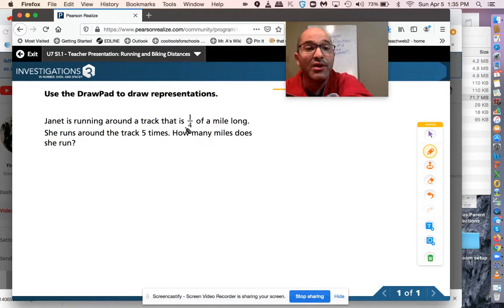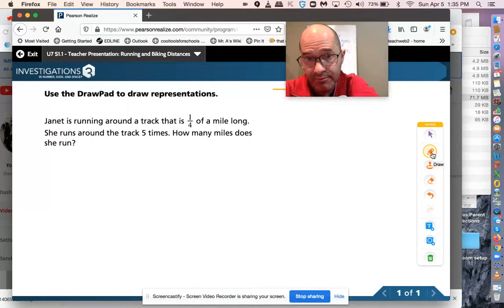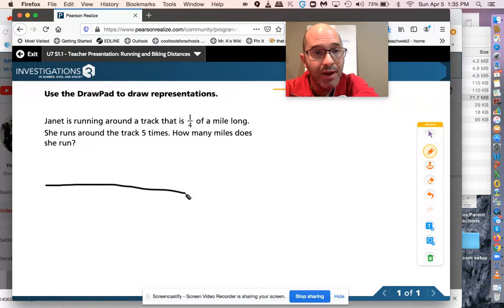It says Janet is running around a track that is one-fourth of a mile long. So this is a mile. That would be half of a mile. This would be one-fourth of a mile, right? We would have one-fourth, two-fourths, three-fourths, four-fourths right here would be one whole mile, right? Because four-fourths is one whole.